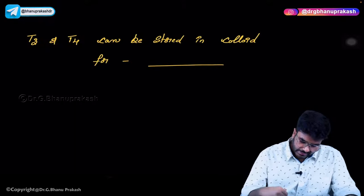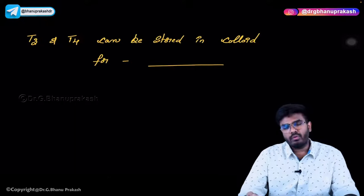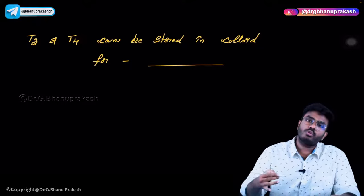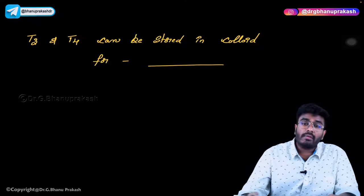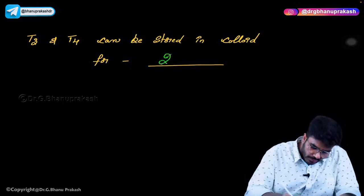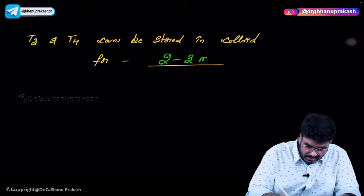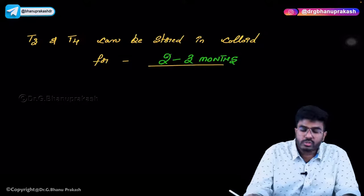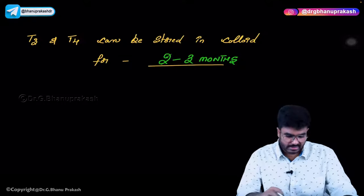At the end of the day we have T3 and T4. Once produced, T3 and T4 can be stored in the colloid for almost two to three months.